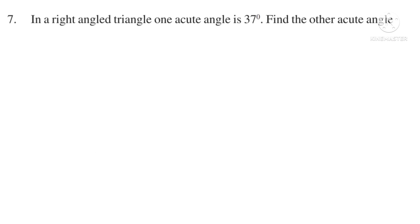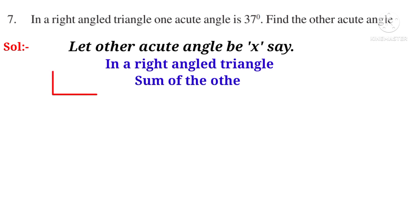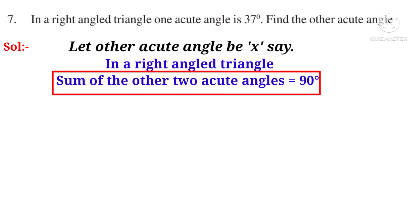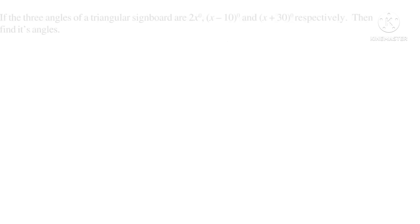Seventh problem: In a right-angle triangle, one acute angle is 37 degrees. Find the other acute angle. Solution: Let the other acute angle be X. In a right-angle triangle there is a 90° angle, so the sum of the other two acute angles is 90°. Therefore, X + 37° = 90°, giving X = 90° − 37° = 53 degrees.